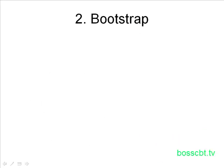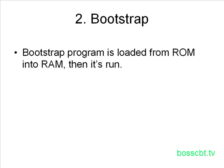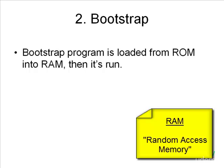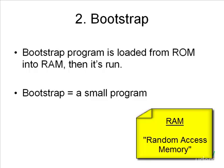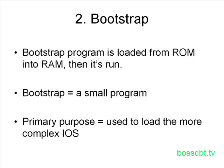Step number two is the bootstrap step. After the hardware is confirmed okay, you might think you can just load the iOS directly, but that's not the case. The bootstrap is another small program loaded from ROM into RAM, and then it's run. The purpose of the bootstrap is to load the more complex iOS — it helps the router get to that point. So we take little incremental steps: first check the hardware, then load the tiny bootstrap program, which then helps load the larger, more complex iOS.